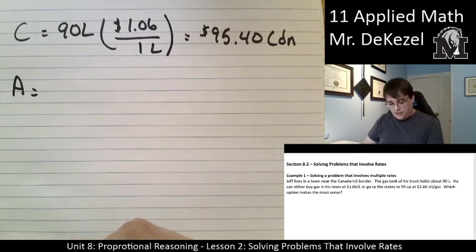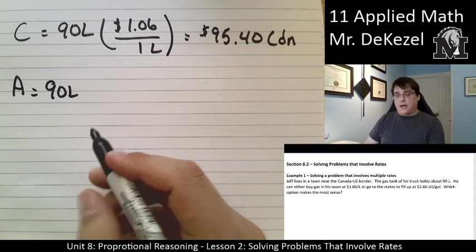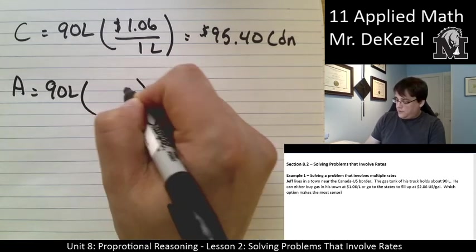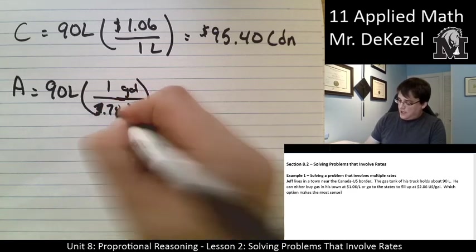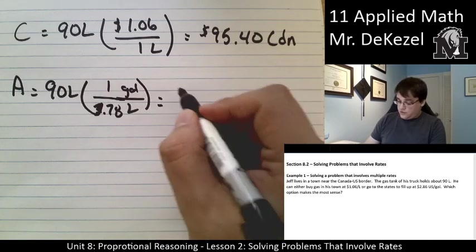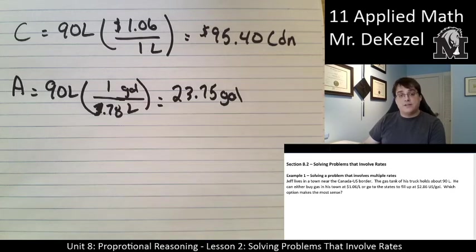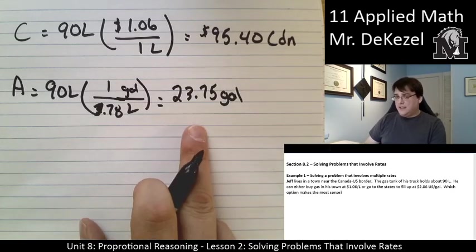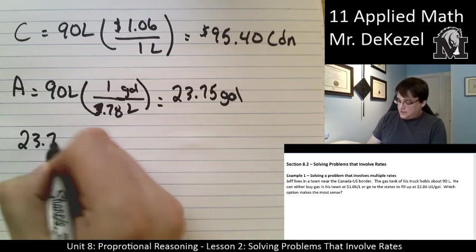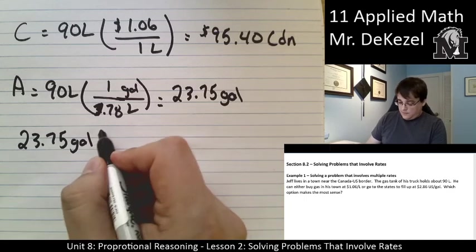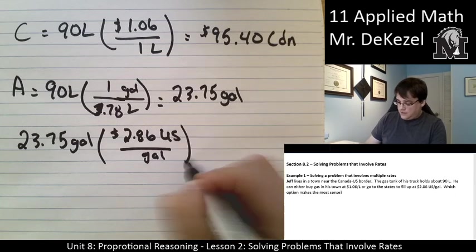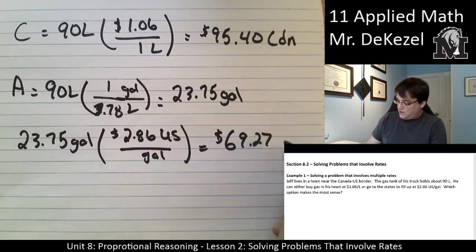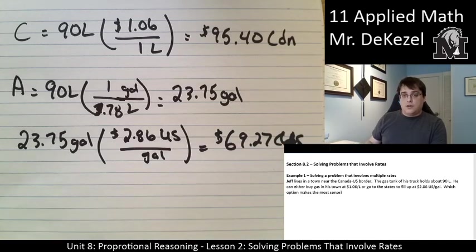First of all, in America, we are going to convert our 90 litre tank into gallons. So, 90 litres. How many gallons are there in a litre, or how many litres are there in a gallon? So, we want gallons on top, with litres on the bottom. In one gallon, there's 3.78 litres. So, 90 divided by 3.78 equals 23.75 gallons for our gas tank. Now that we have our gas tank in gallons, we can find out how many U.S. dollars this would cost. So, we've got 23.75 gallons, multiplied by $2.86 U.S. per gallon, which is equal to $69.27 U.S.